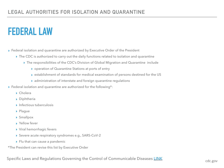Viral hemorrhagic fevers include Marburg virus and Ebola virus. Note that the list also includes influenza and severe acute respiratory syndromes, which includes the coronavirus. The President can revise this list according to executive order. If you'd like to take a look at the specific laws and regulations governing the control of communicable diseases, check out the link at the bottom.